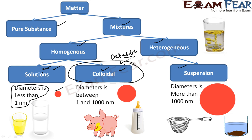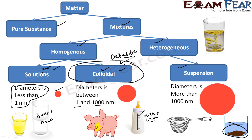Colloidal particles are a little larger — one to one thousand nanometers. Suspension particles are even larger than that. An example of a solution is salt dissolved in water. An example of a colloidal is milk — milk itself is a colloidal solution, which you can dilute a little. An example of suspension is mud and water. These types have different physical properties because of their different particle sizes.